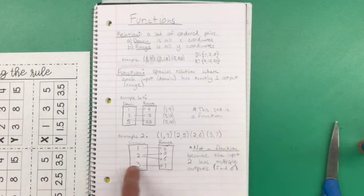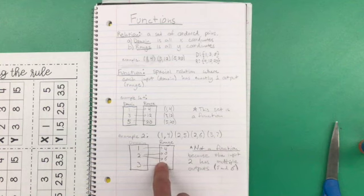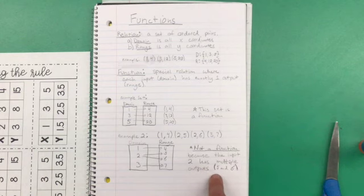As you can see, when we set up our domain and our range, our x's and our y's, actually, the 2 member of our domain tracks to both 5 and to 6. And so this is not a function because the input 2 has multiple outputs, 5 and 6.